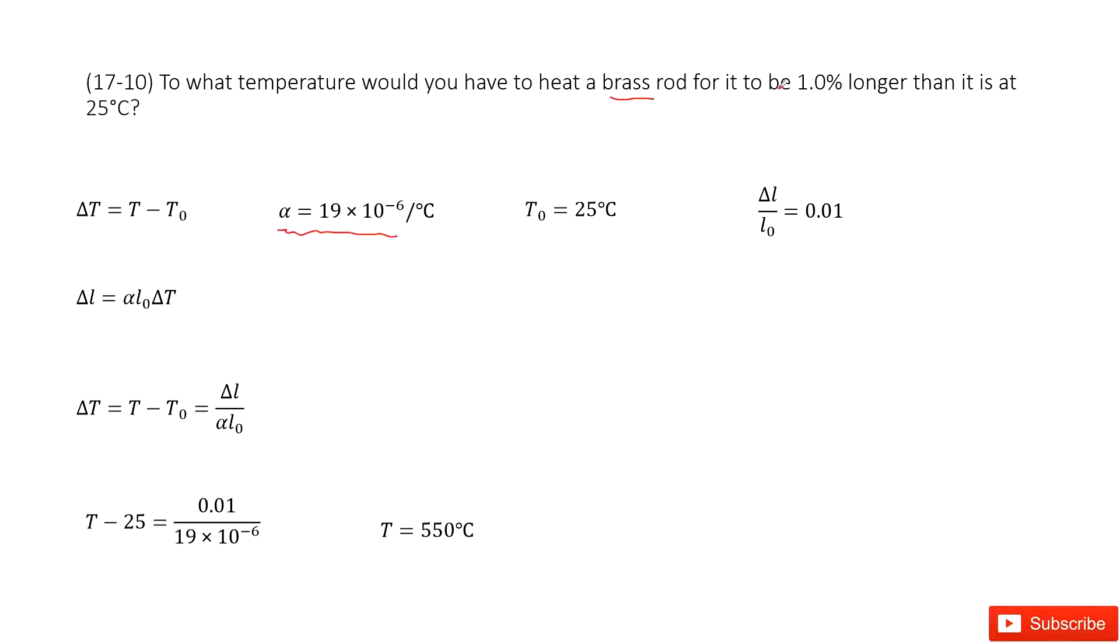And also, they tell you that this brass rod just increased 1% longer. So for that one, we can write this function. The ratio of the increased part, delta L divided by L0, is 0.01, which is 1%.